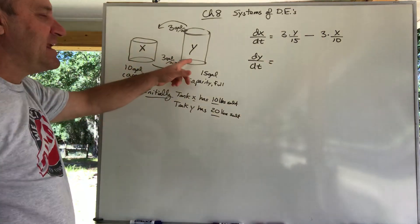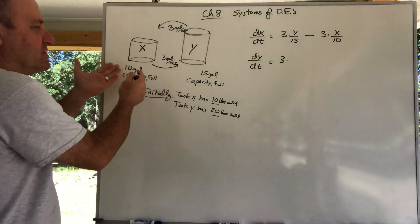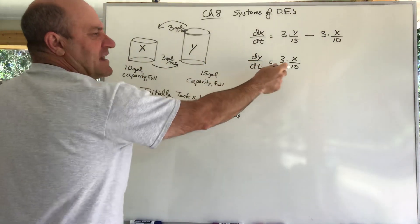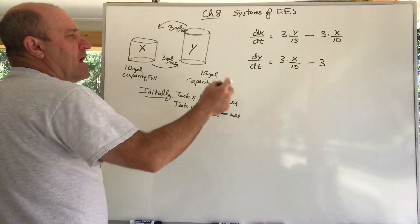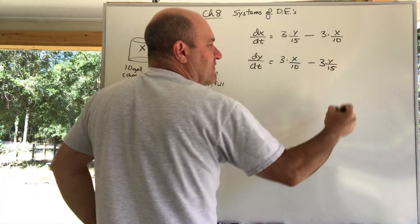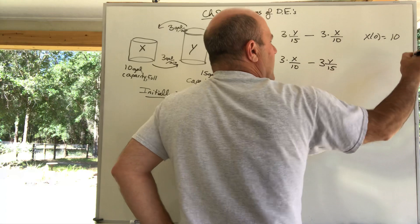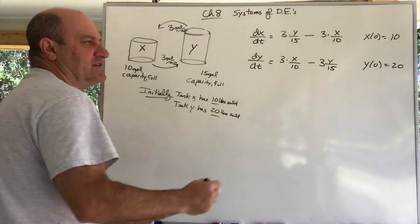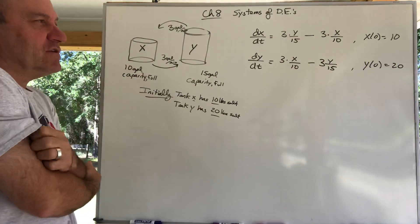Now, what about dY/dt? What's coming into dY/dt is a positive 3 gallons a minute of X over 10 — that's the concentration leaving X, an unknown amount of salt X over 10 gallons of water. What's leaving tank Y is negative 3 gallons a minute of an unknown concentration Y over 15. The initial condition for X at 0 is 10 pounds of salt, and for tank Y at time 0, there's 20 pounds of salt. This is a system of two linear differential equations.